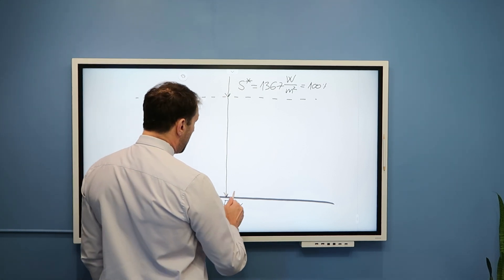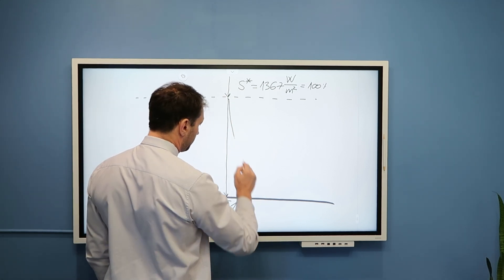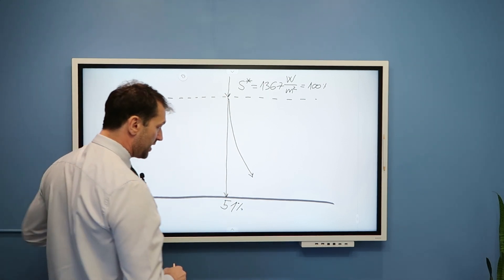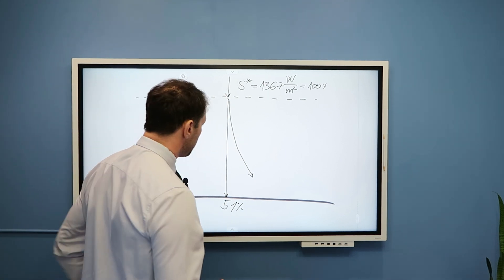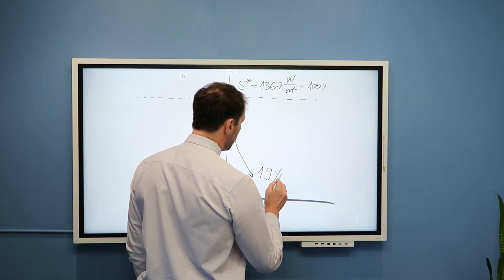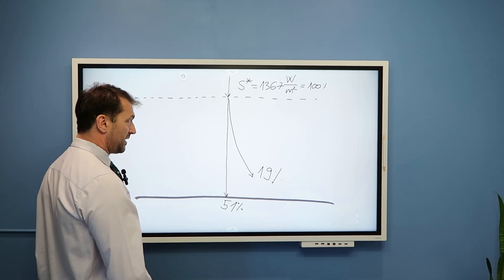Now, a certain amount of radiation, solar radiation, everything in this video is solar radiation, is also being absorbed by the atmosphere, but not that much. Only about 19% is being directly absorbed by the atmosphere.